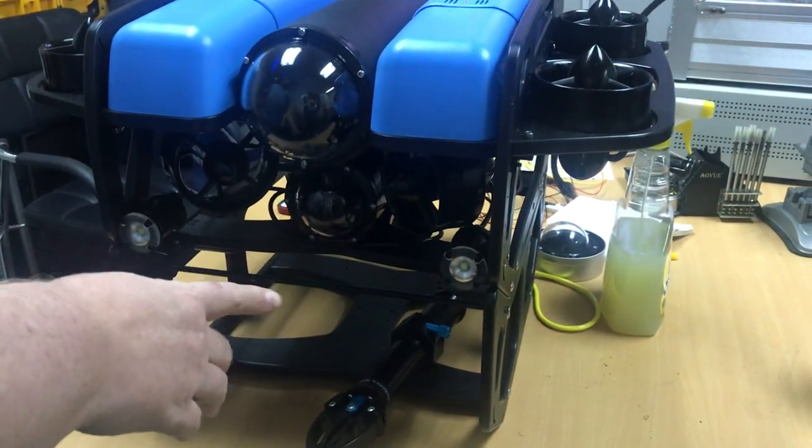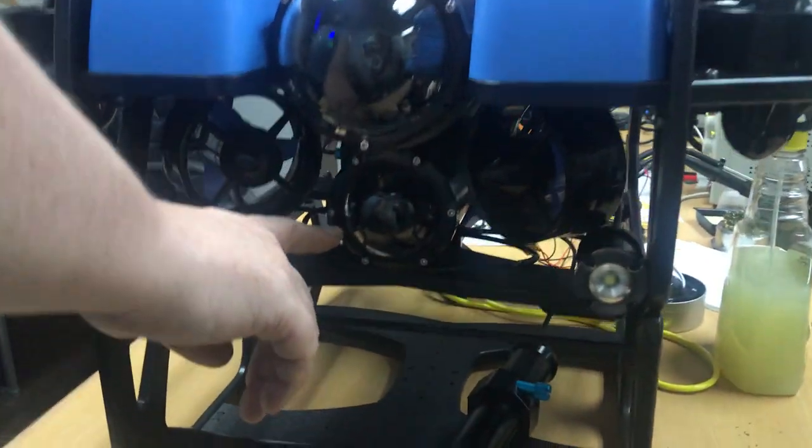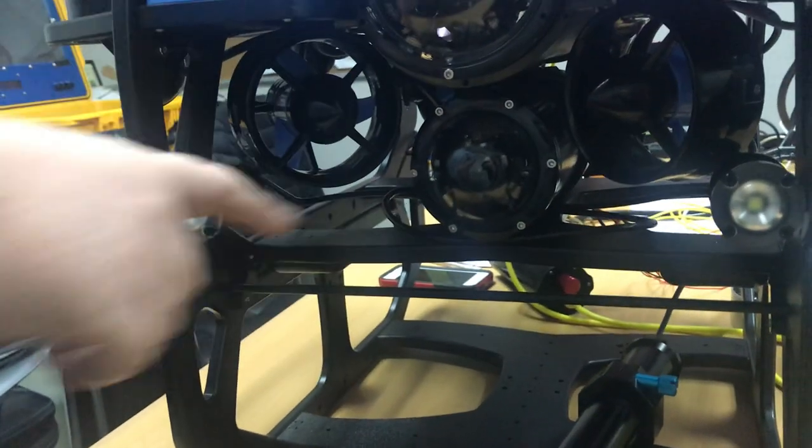I'm just showing you our inspection setup. We have the Blu-Rov2 camera at the top and our inspection camera mounted inside the battery housing.